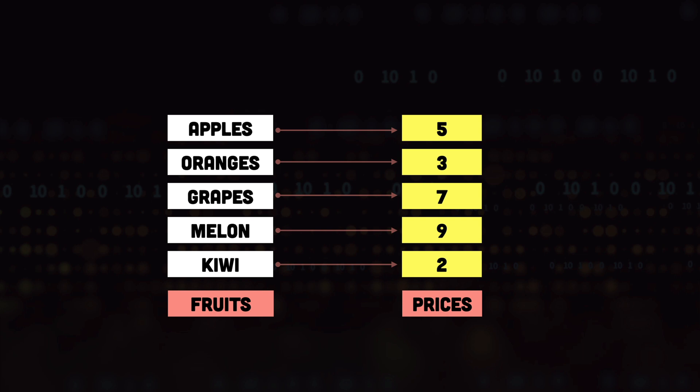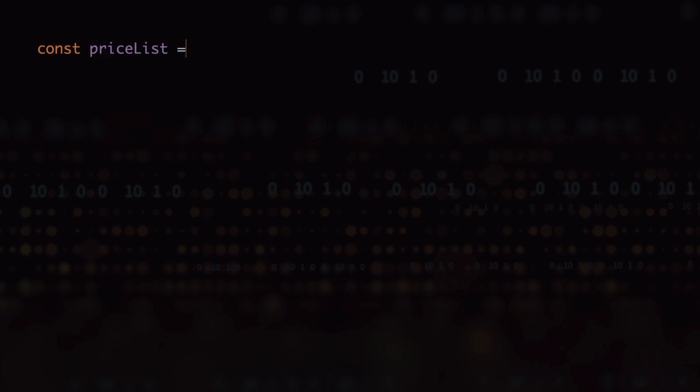Now that we know what hash tables are, let's look at the implementation to see how we can create a hash table and what different operations you can perform. We will be looking at the implementation in JavaScript, but the concepts are mostly similar in other languages also. First of all, we need to create an empty hash table for our price list. We will do that by creating an object of the Map class.